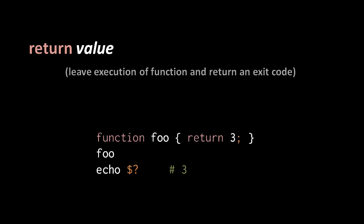This example function does nothing except invoke the 'return' built-in to explicitly return the value 3. Notice we use the special variable expansion $? which expands into the exit status of the previously executed command. So after invoking 'foo', which returns 3, the expansion $? gives us the value 3.